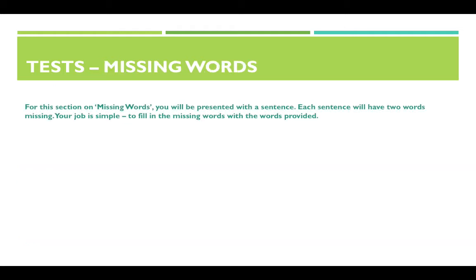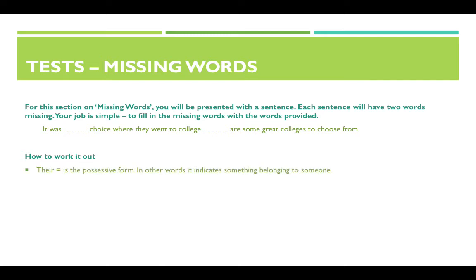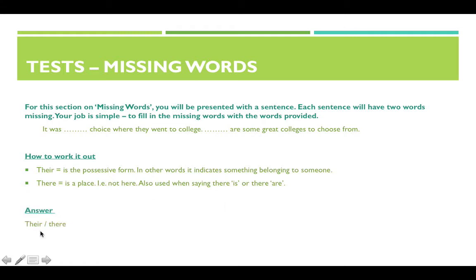Missing words: you will be presented with a sentence that has two words missing, and your job is to fill in the missing words with the words provided. The sentence is: 'It was ___ choice where they went to college. ___ are some great colleges to choose from.' The words given are 'their' and 'there'. The first gap uses 'their' — the possessive form. The second gap uses 'there' — referring to a place. So the answer is 'their' (T-H-E-I-R) and then 'there' (T-H-E-R-E).